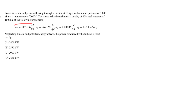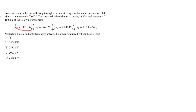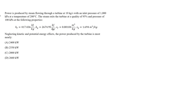They actually give us the properties at the exit for 100 kPa, so we don't need to use the tables for that. Neglecting kinetic and potential energy effects, we are asked to find the power produced by the turbine, which is our W-dot, and it's going to be in units of kilowatts.